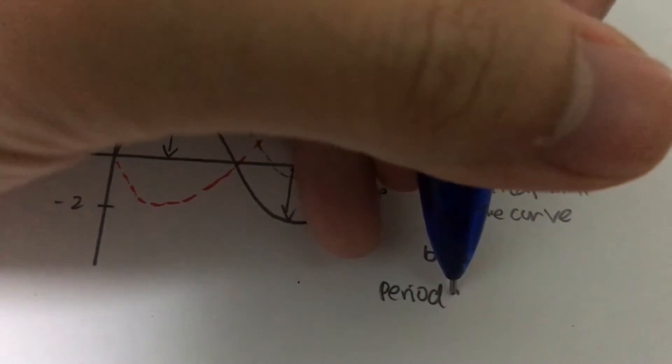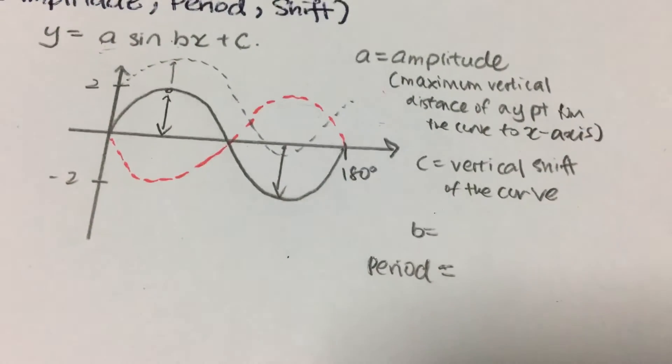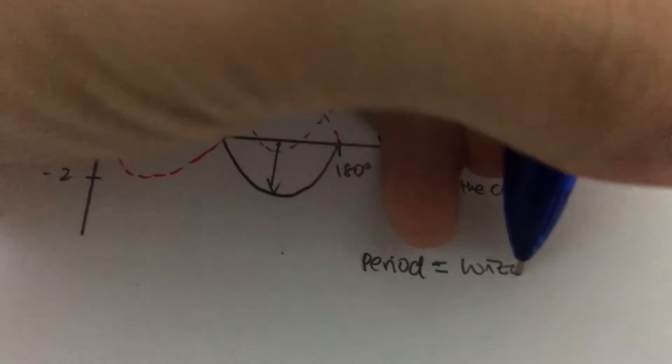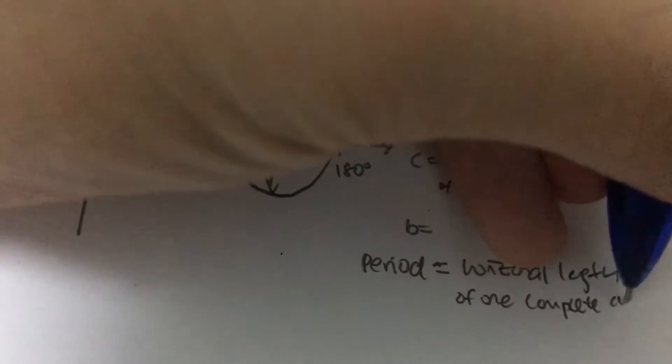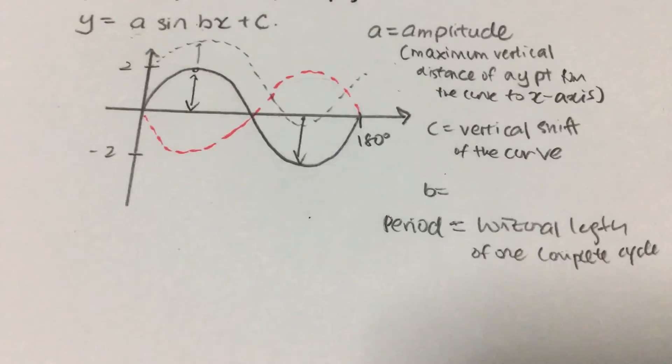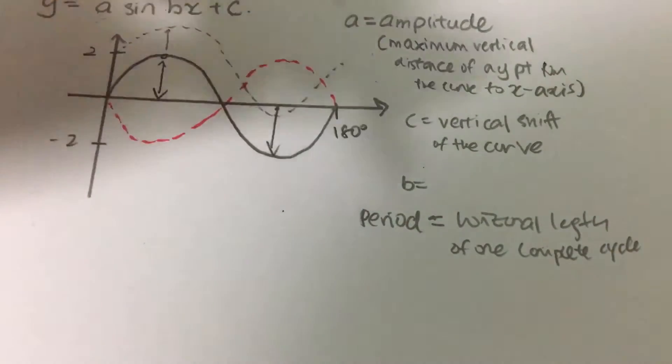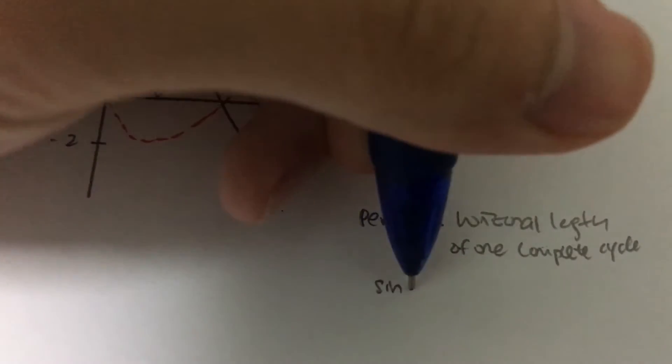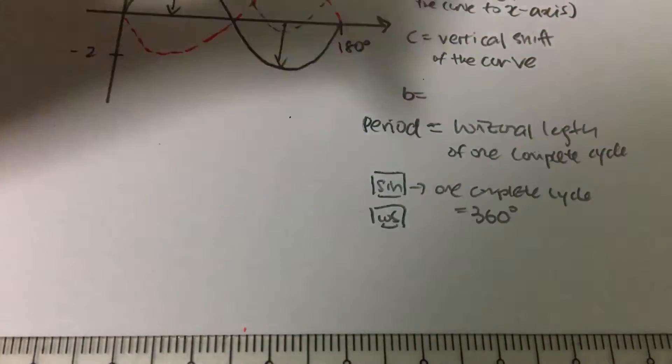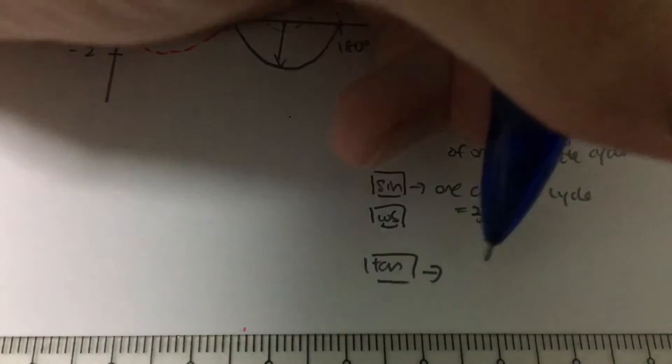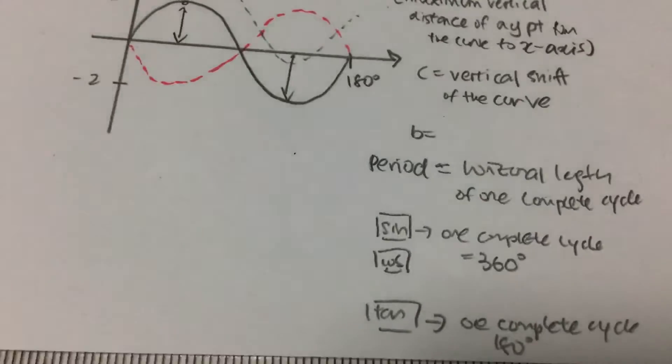Before I talk about b, first thing first I need to talk about what is the definition of a period. So period is basically the horizontal length of one complete cycle. Usually for sine itself, for this usually the case for sine, one complete cycle, the length is actually 360 degrees. So for sine itself, for cosine itself, one complete cycle is 360, whereas for tangent one complete cycle is only 180.